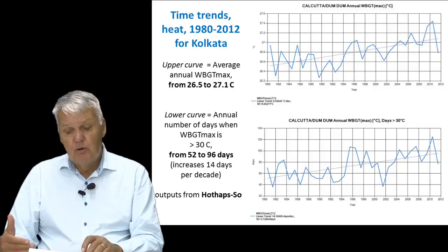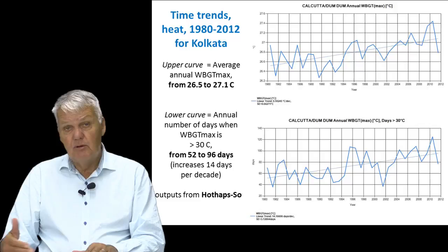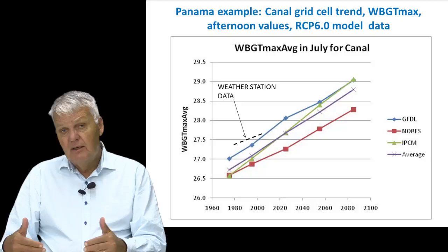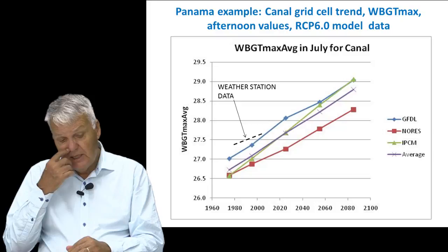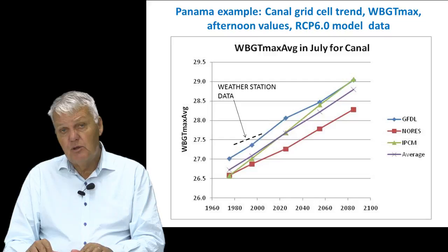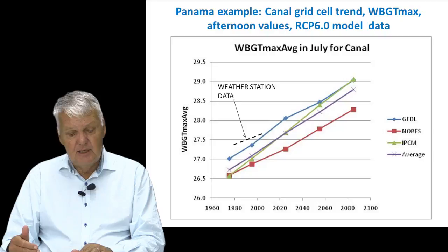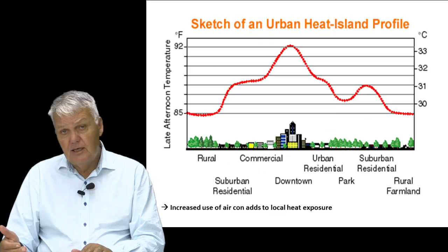All of these data indicate that already now there is a problem for many tropical countries in terms of heat during the hottest part of the year, which in some places goes on for several months. Another example shows modeling data for Panama City and the Panama Canal area. Future modeling increases heat stress levels by about two to three degrees depending on which model is used, which will again increase the number of super hot days much more rapidly than the average trend.